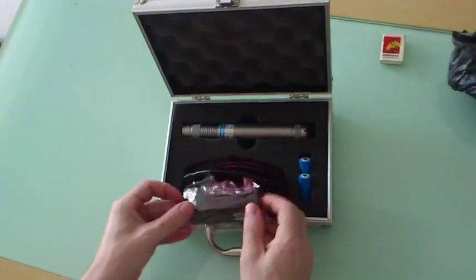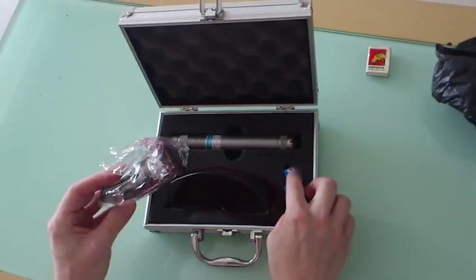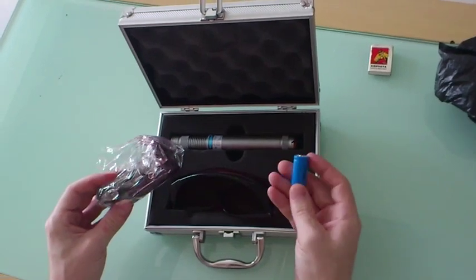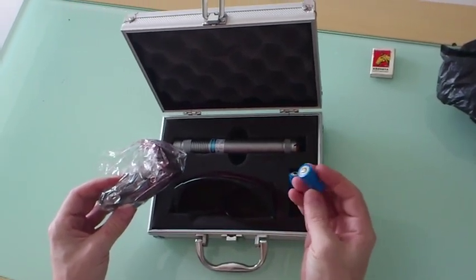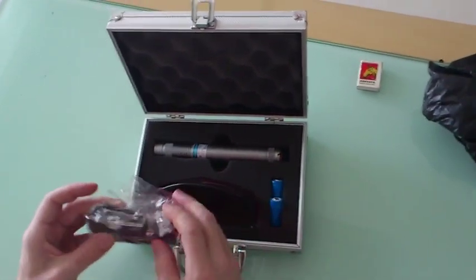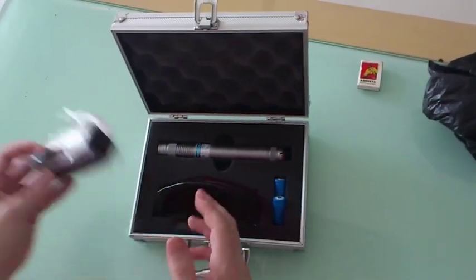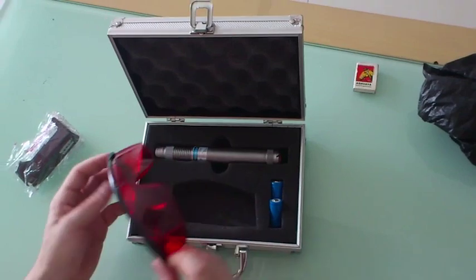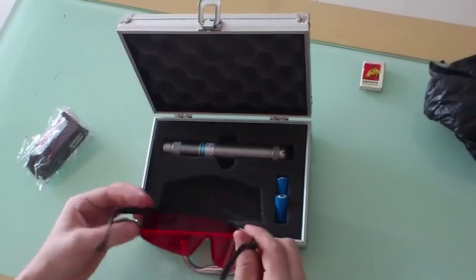Comes with a charger, of course, and two rechargeable batteries. These are standard batteries that you can find at any camera shop. The charger will charge one battery at a time. Of course, the obligatory safety goggles.